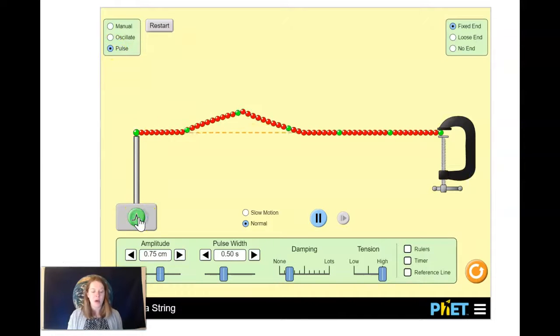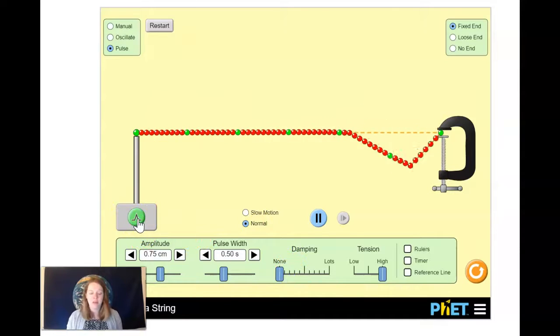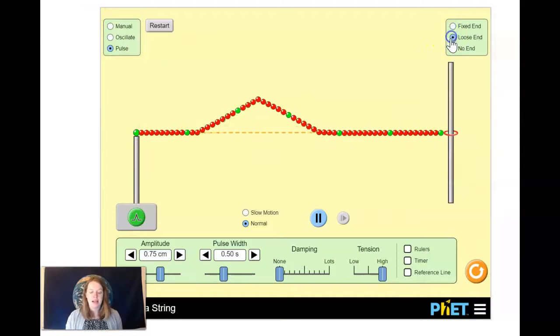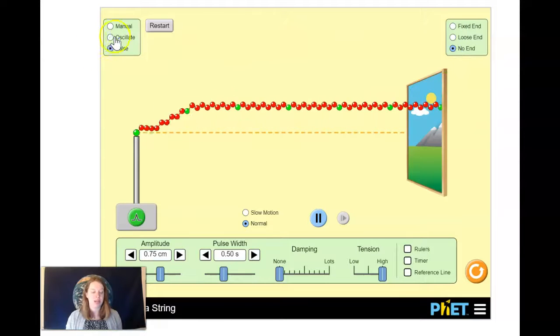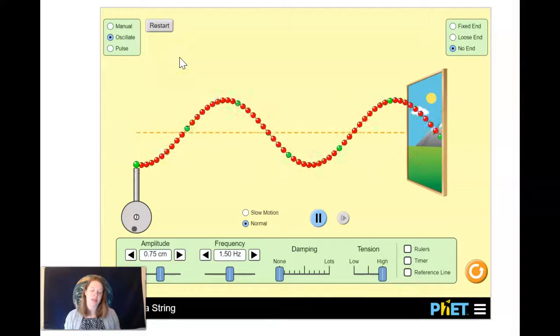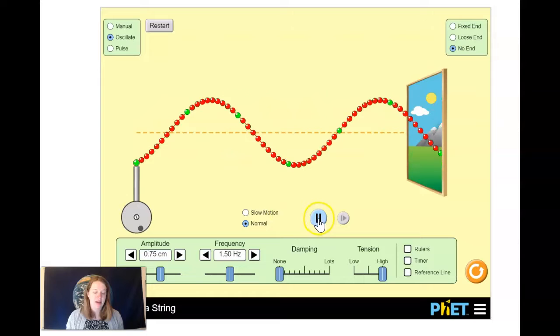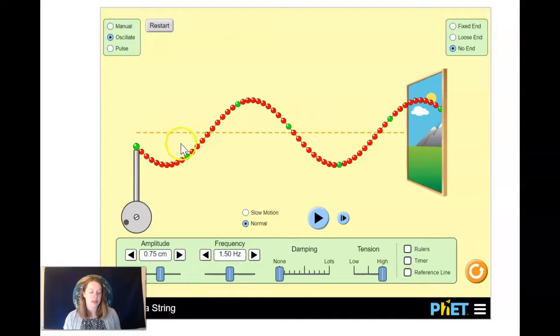So I'll show you another example of this. So we can have just a single pulse. A pulse is not an oscillation. It's not a wave. It's just one bit of energy moving. But a wave is a continuous oscillation that sends energy from one point in space to another point in space.